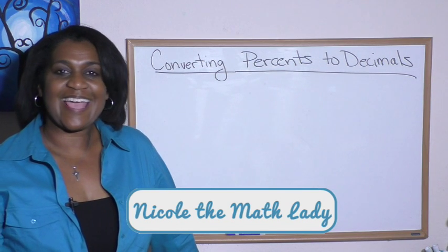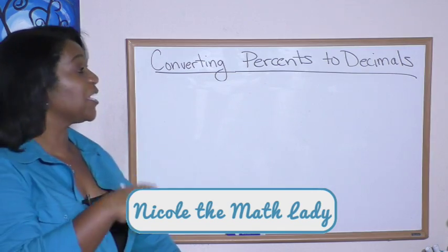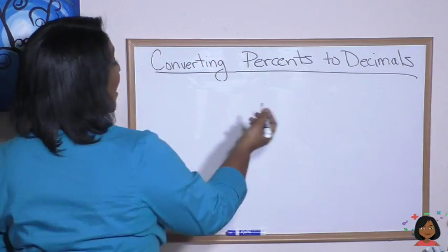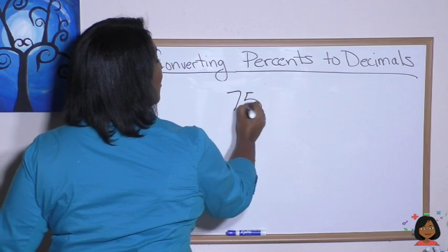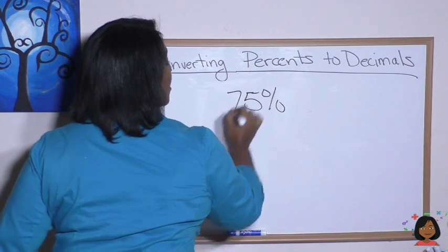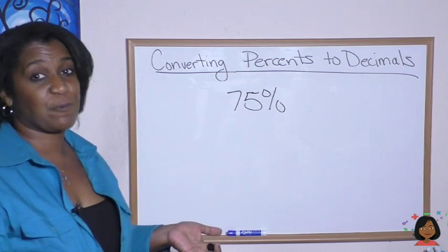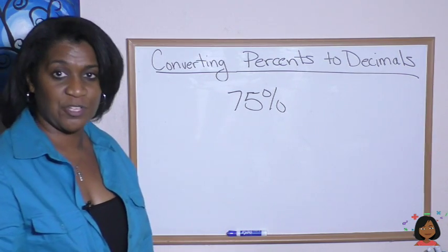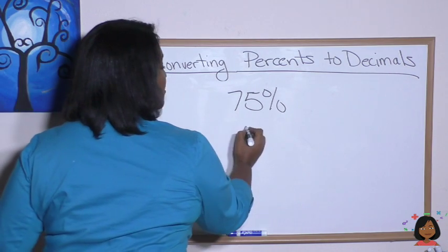Hi, it's Nicole the Math Lady, and today we're talking about converting percents to decimals. Let's say I had 75 percent. Well, we know that 75 percent, really any percent, is that number over 100.